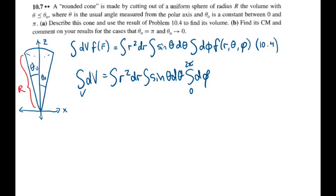In theta, we've just been told that it spans from 0 to theta naught, whatever that is. And in r, we're just integrating from 0 to R, the radius of the sphere that it's been cut out of.